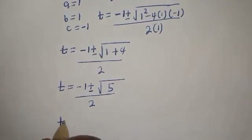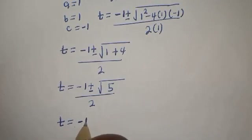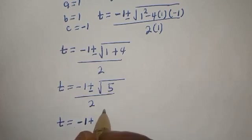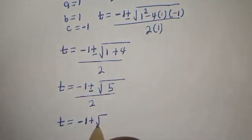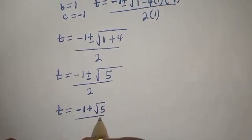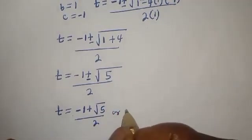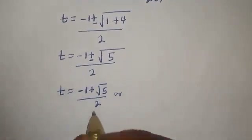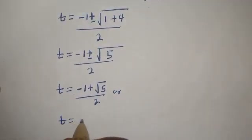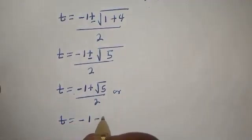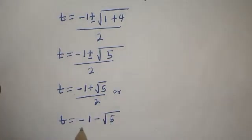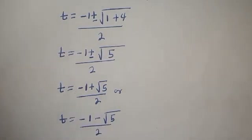Then t is equal to minus 1 plus root 5 over 2, or t is equal to minus 1 minus root 5 over 2.